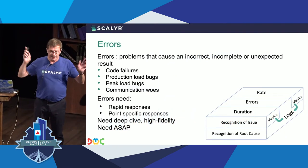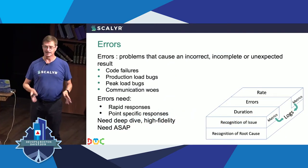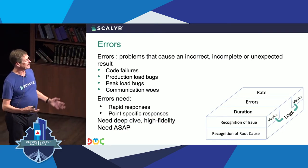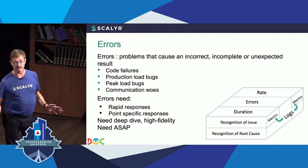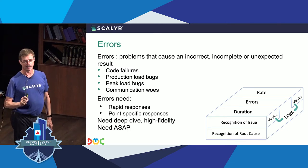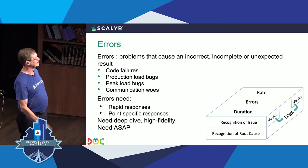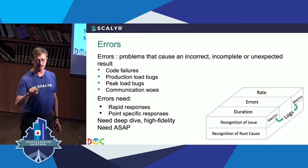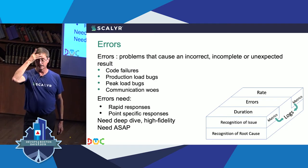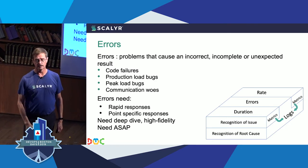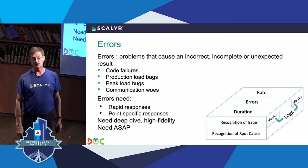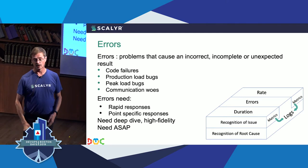Errors — obvious, incorrect, incomplete, or unexpected results. It can be code violations, production peak loads, or communication headaches. Errors need rapid response — if things are broken, you've got to fix it. It also usually requires very point-specific responses. It's not just 'the problem is in my app server cluster of seven servers' — it's where and what is happening, then start digging into it.